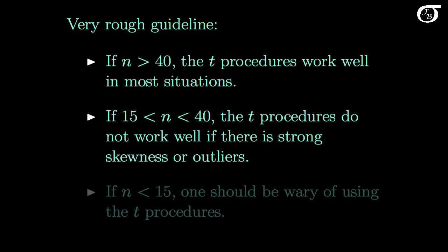If the sample size is a little smaller, between 15 and 40 say, the t procedures can work quite well, but they can also break down if there is strong skewness or outliers. If the sample size is smaller still, less than 15 say, one should be wary of using the t procedures. It can be reasonable to use them if we are quite confident the population is approximately normally distributed, but it's always a little bit dubious using the t procedures for very small sample sizes.